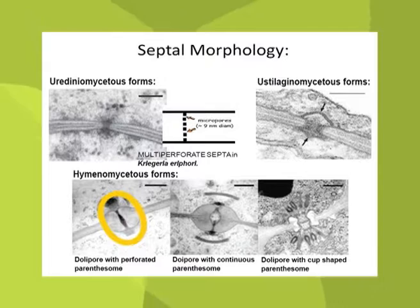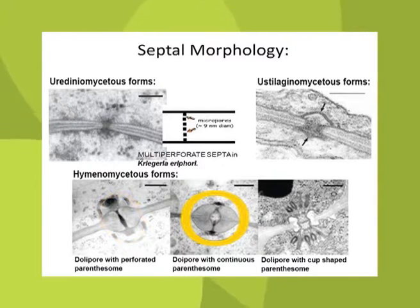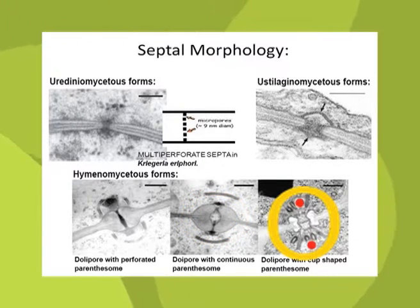The parenthesome structure is also a taxonomic marker: in some members the parenthesome is continuous, in others it is porous, and in yet others it is cap-shaped, as seen in the respective diagrams. This dolipore septa with perforated parenthesome, or the continuous parenthesome, or the cap-shaped parenthesome — septal morphology plays an important role in the systematics and phylogeny of basidiomycetes.